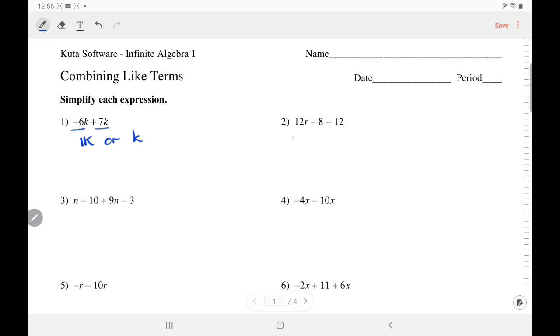Over here, 12r stands alone, so we don't have to combine it with anything else. But these numbers are like terms, so add negative 8 and negative 12. When adding two negative numbers, it gets even more negative. More means to add 8 and 12 is 20.